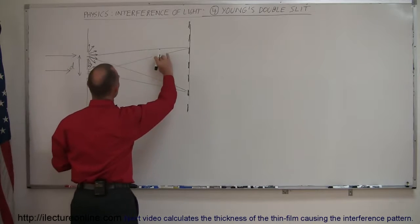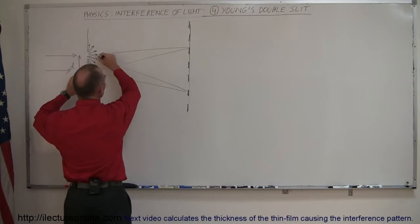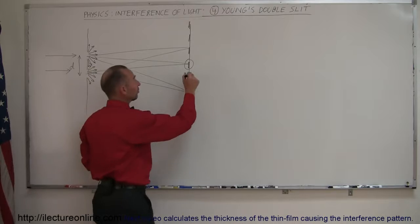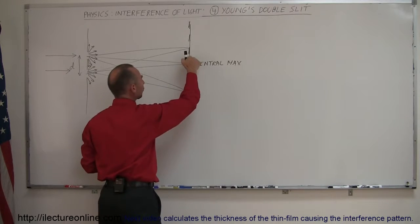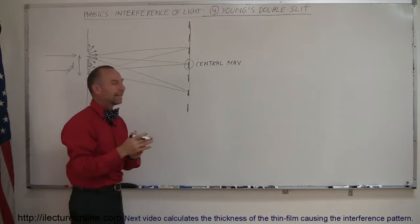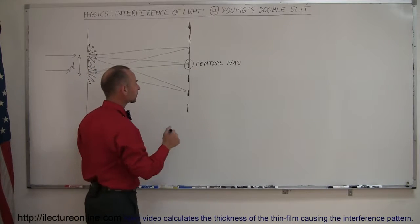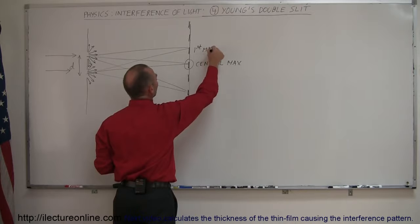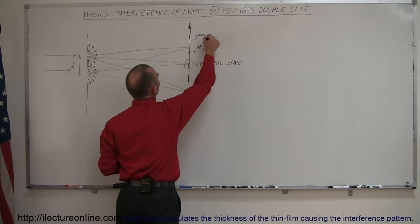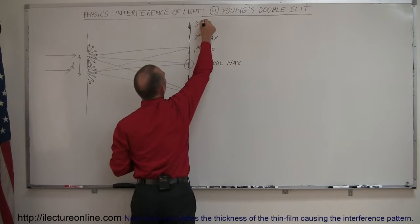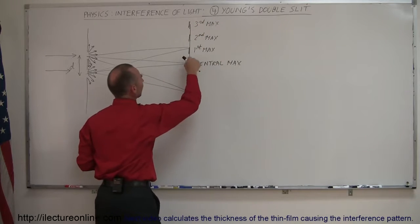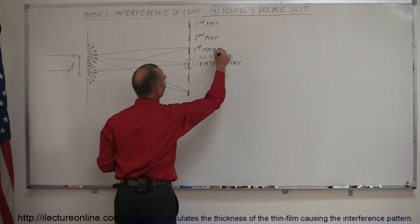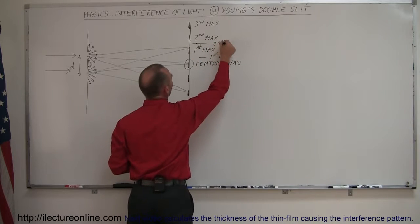The spot directly across from the slits — those rays travel the exact same distance, so at that point you get constructive interference. This is called the central maximum. Then we have the first dark spots where light completely destructively interferes, so you see nothing. Then you see the first bright spots away from the central maximum — the first max, second max, third max, and so forth. These are the interference fringes.